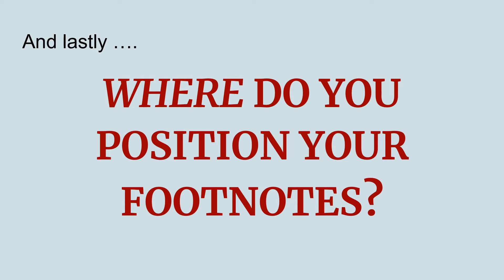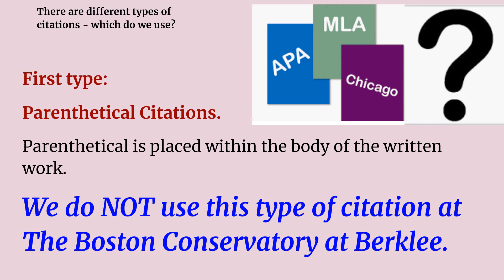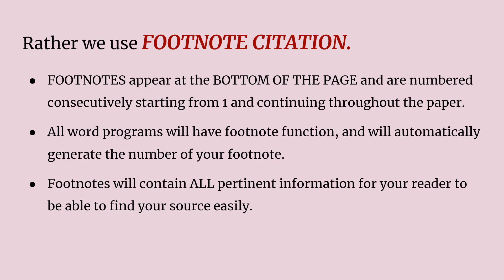And lastly, where do you position your footnotes in the paper itself? There are many different kinds of citations, and there are several different ways of footnoting: either in parentheses in the body of your paper, at the bottom of the page, or even at times at the end of the paper. Those are called endnotes, but they are very rare. The first type, parenthetical citations, is often used in high schools and in other areas of study, and they are simply placed within the body of the paper itself. Because many different music journals do not do this, we do not use this type of citation at the Boston Conservatory.